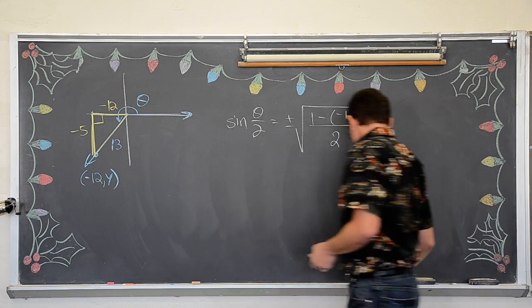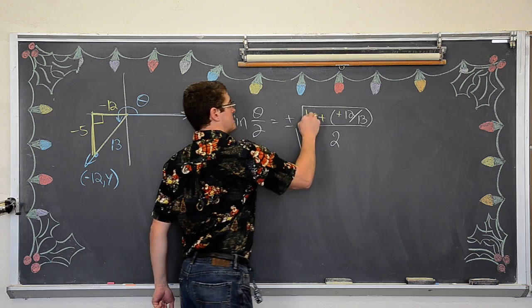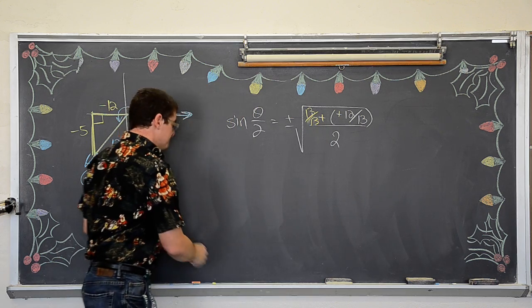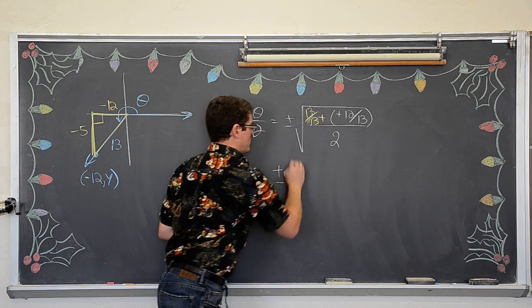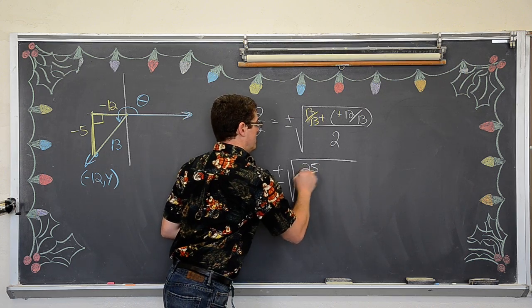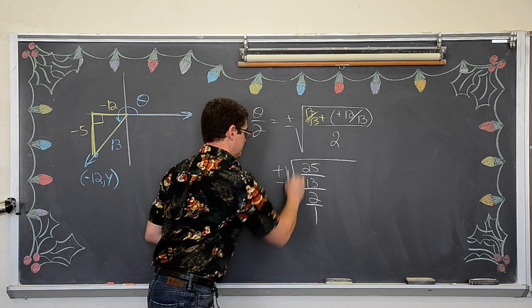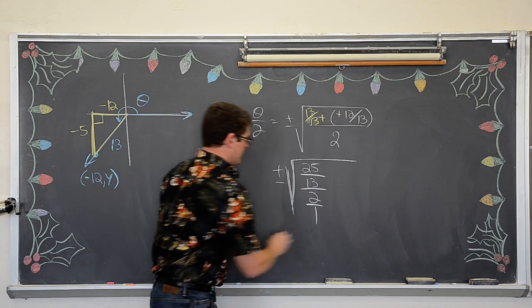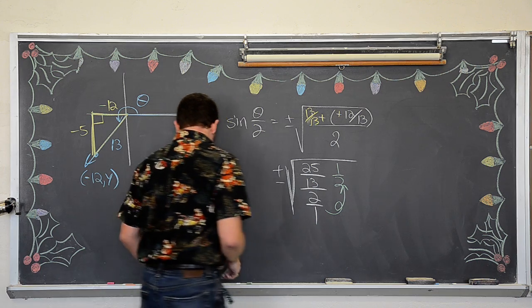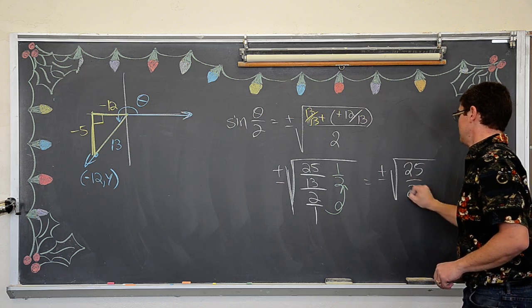So we need to, once again, have common denominators. These two negatives are also going to cancel out, so this becomes 13 over 13. Plus or minus the square root of 13 plus 12, which is 25 over 13 divided by 2 over 1. So that 2 over 1 is going to get flipped up and it is going to become 1 over 2. And we have plus or minus the square root of 25 over 26.